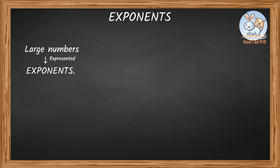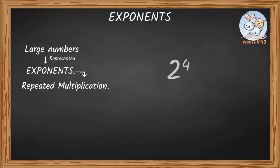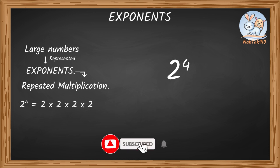In simple terms, exponents tell us that a number is multiplied by itself a certain number of times. That means we can say exponents represent repeated multiplication. For example, 2 to the power of 4 means 2 is multiplied 4 times. So, 2 to the power of 4 equals 2 times 2 times 2 times 2.